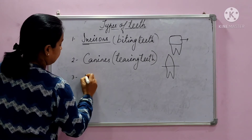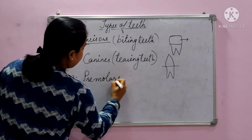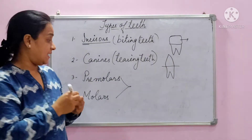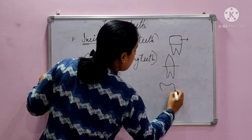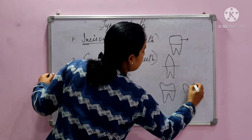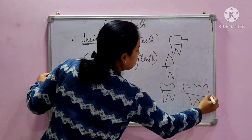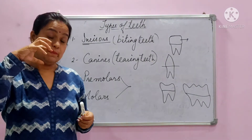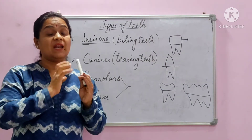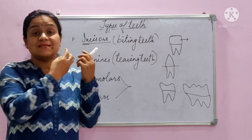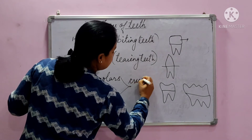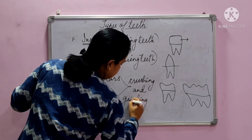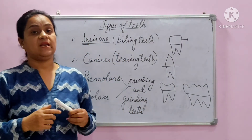The third type of teeth are premolars, and the fourth type are molars. Both premolars and molars are broad teeth. Premolars are slightly smaller, and molars are a bit broader than premolars. These premolars and molars help in crushing and grinding the food. Once we eat food, we bite it, make it smaller, and then it is crushed and well ground by these teeth. So these are the crushing and grinding teeth.